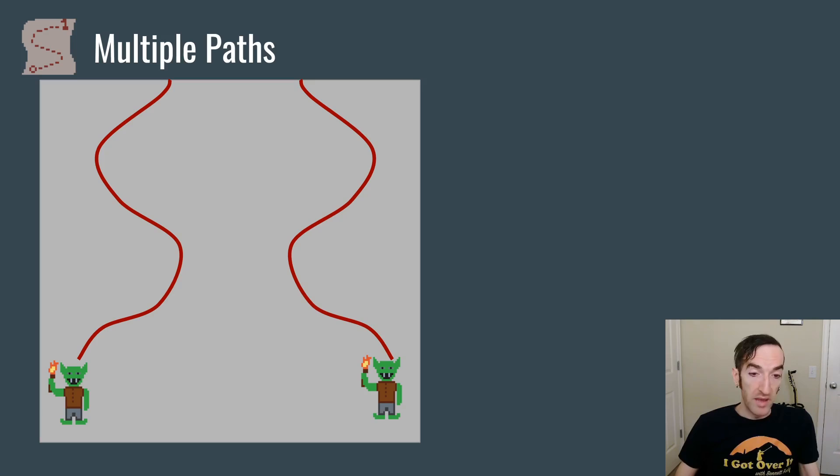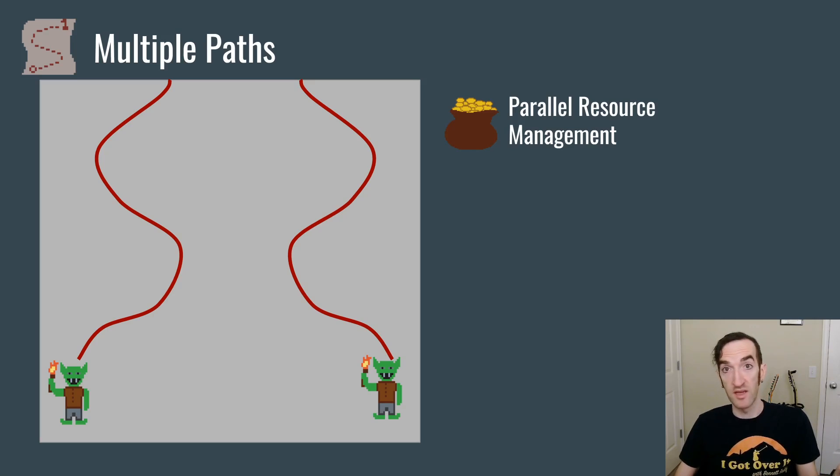Many maps are going to have multiple paths that monsters will go along that are each going to reach either the same or different destinations. One of the things that this provides is it gives a new challenge of doing parallel resource management, where the player will be getting resources from each of these different paths and then need to allocate those resources in order to defend the paths.